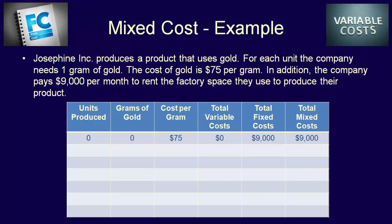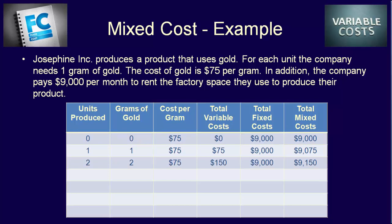At zero units, the total mixed cost equals 0 × $75 plus $9,000, which equals $9,000. At one unit, total mixed cost equals 1 × $75 plus $9,000, which is $9,075. At two units, total mixed cost equals $75 × 2 plus $9,000, which is $9,150.